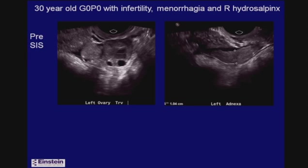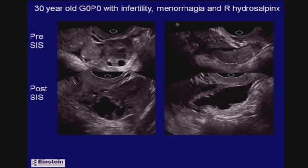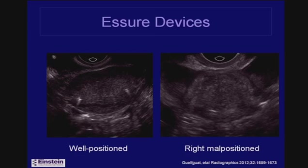An interesting example: a patient came for a sonohysterogram primarily for menorrhagia but also had a history of infertility. She had a right hydrosalpinx. On the left, next to a normal-looking ovary, was a slightly thickened fallopian tube measuring about one centimeter — too much but not dilated. After the hysterosalpingogram procedure, the left fallopian tube had dilated up because it was obstructed on the other end — effectively creating a hydrosalpinx during the injection.